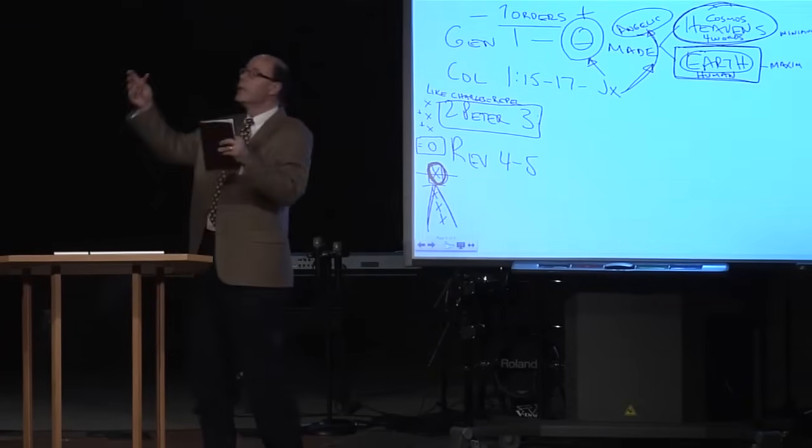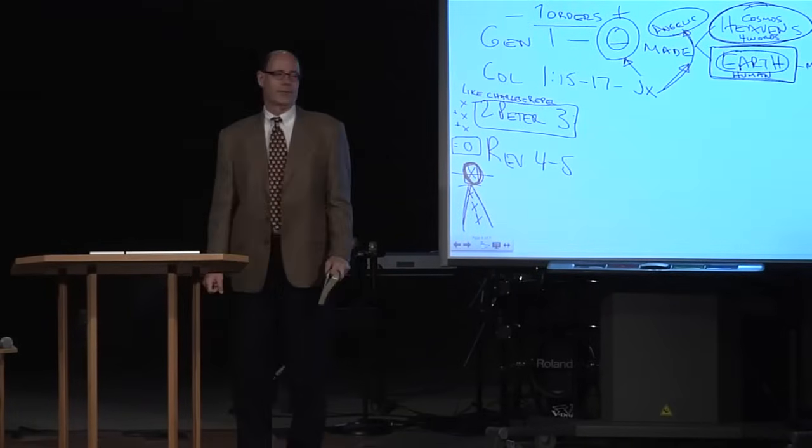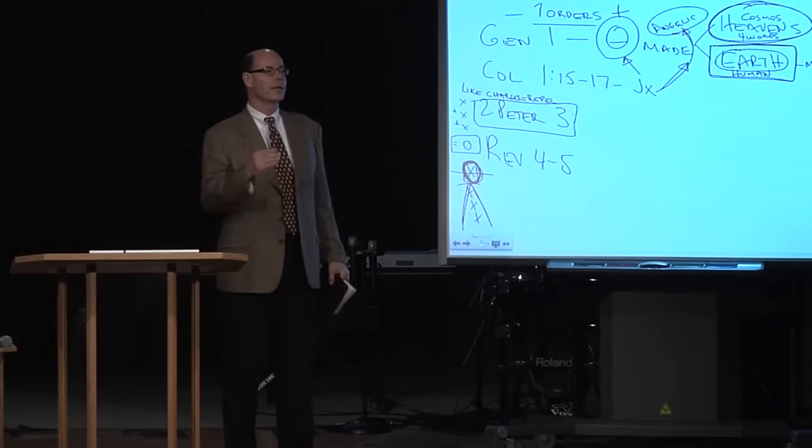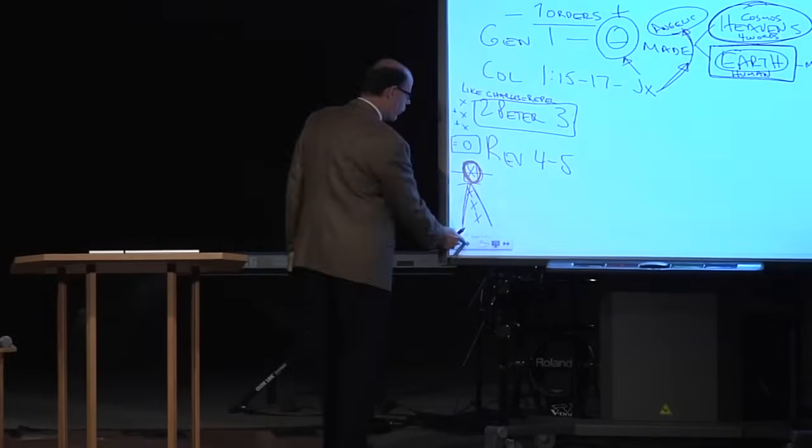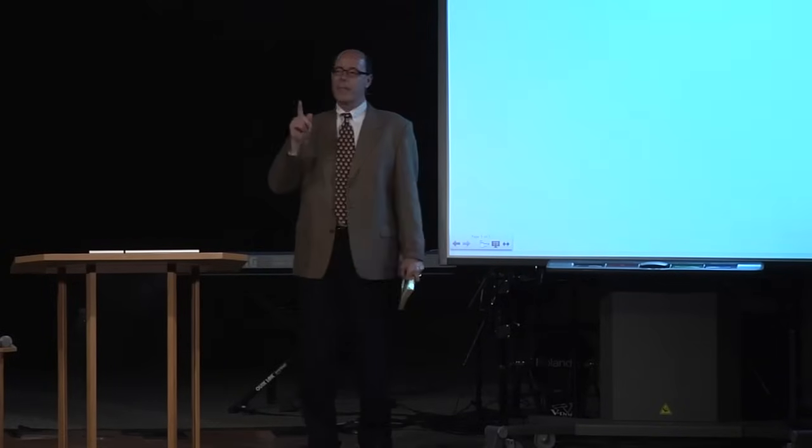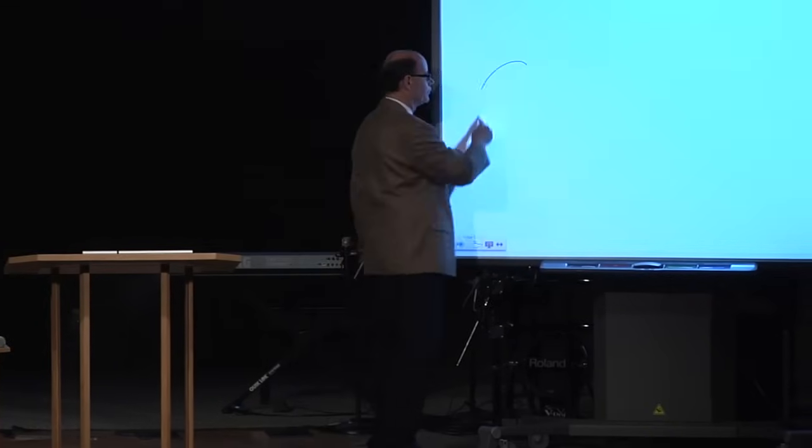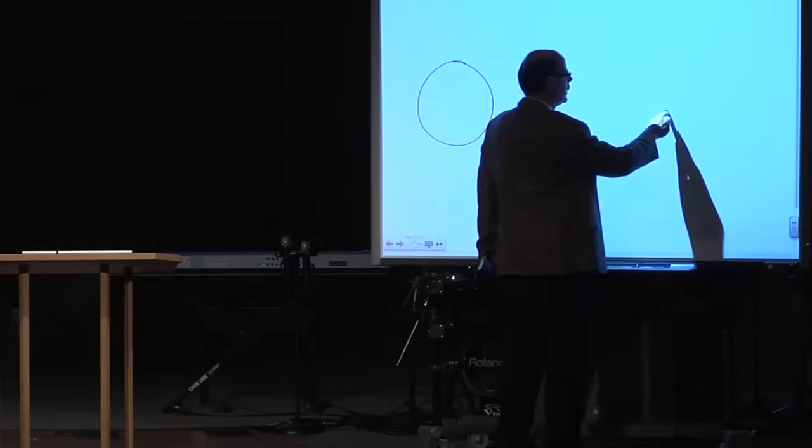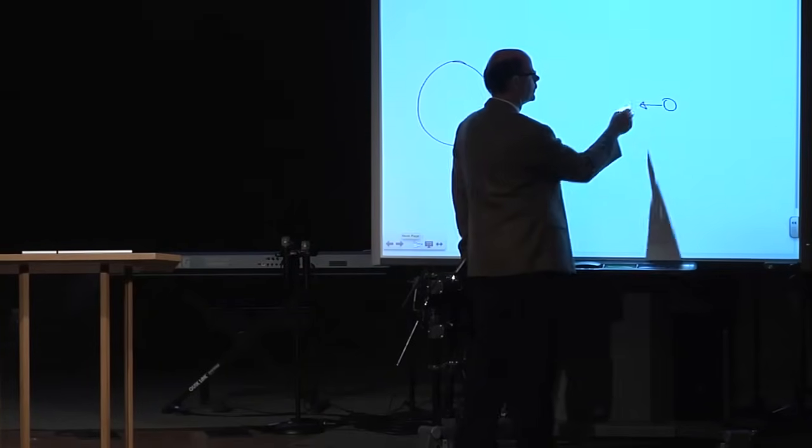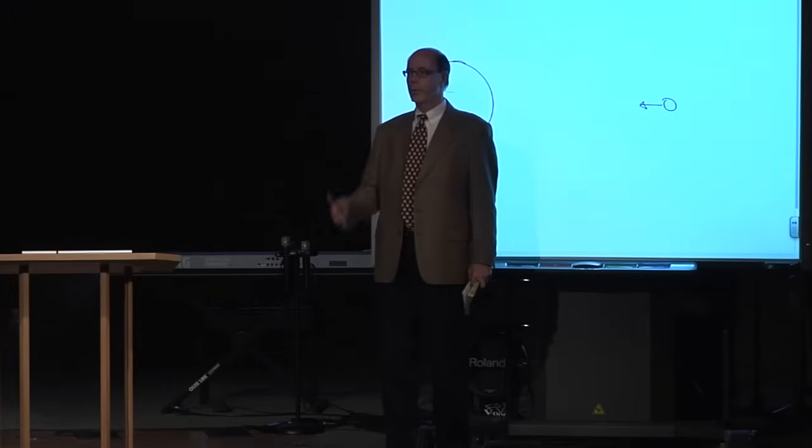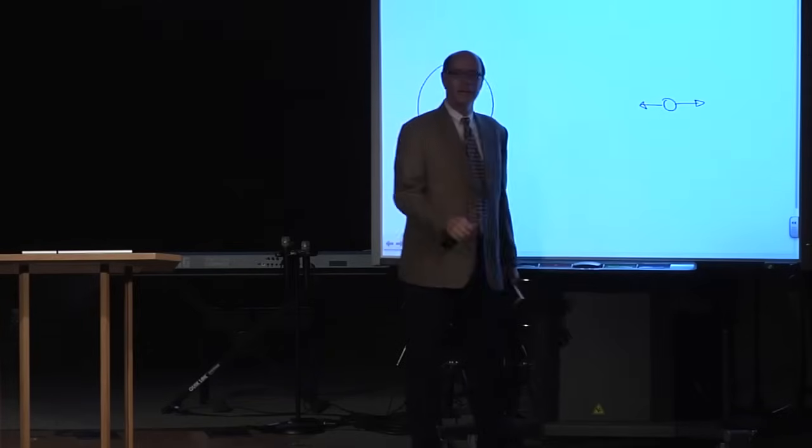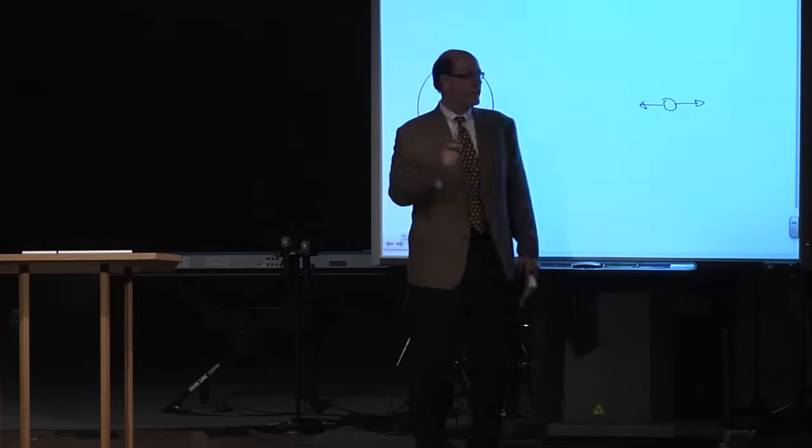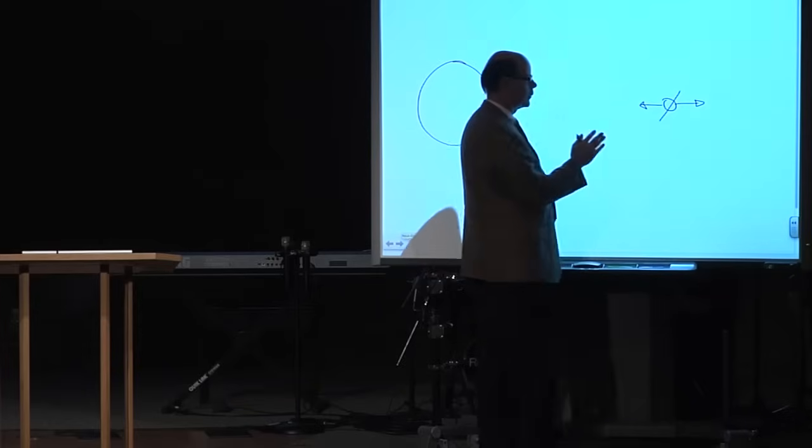You know how they're always, the scientists are looking out there and they're saying, there's another one that could support life. Really? Now there's something that, did you know that it's called the anthropic principle? Did you know that there are 21 precise measurements that make life possible? Here's the sun and here's the earth. If the earth was any closer to the sun, any closer, we'd boil off. If we were any further, we would freeze. It's at the exact right place.